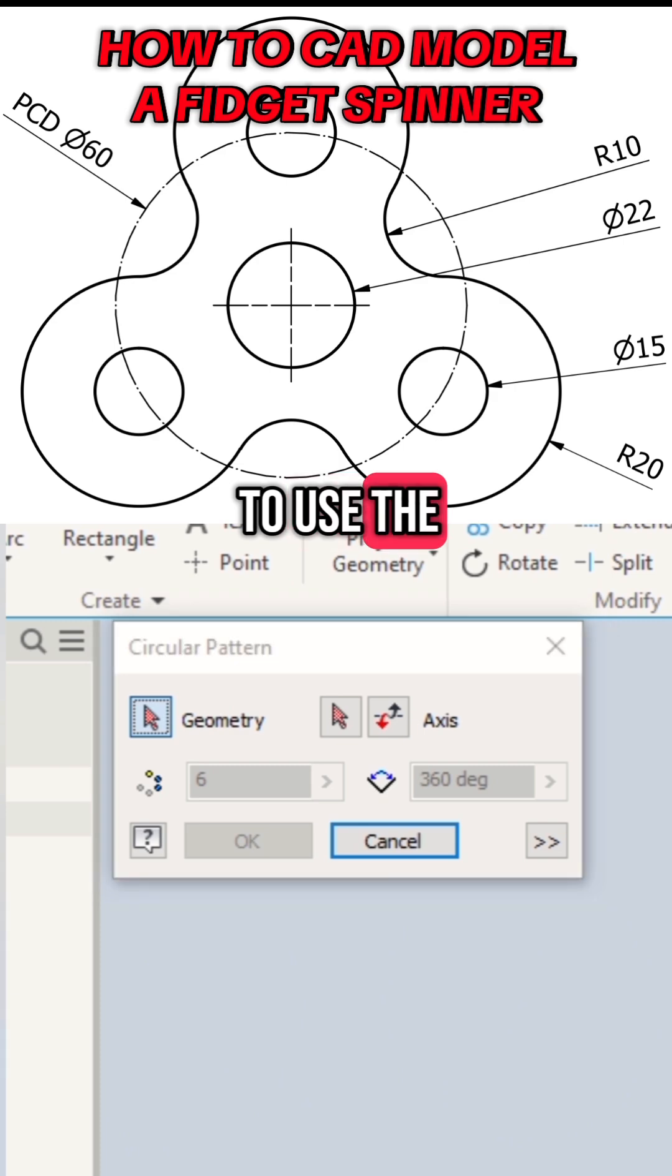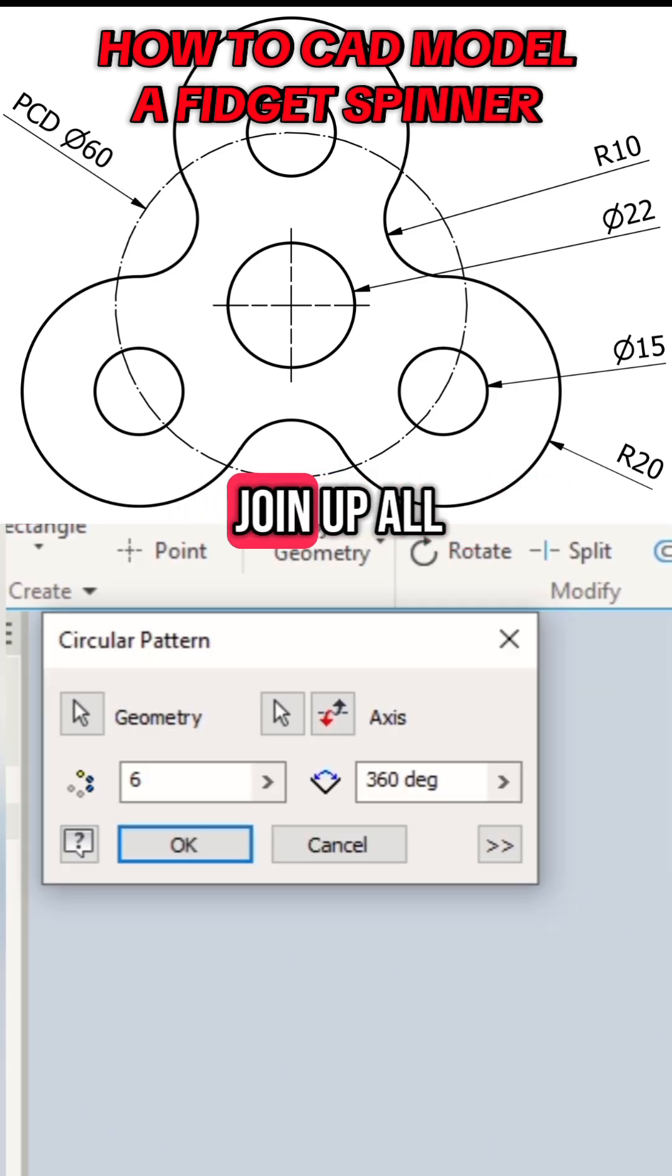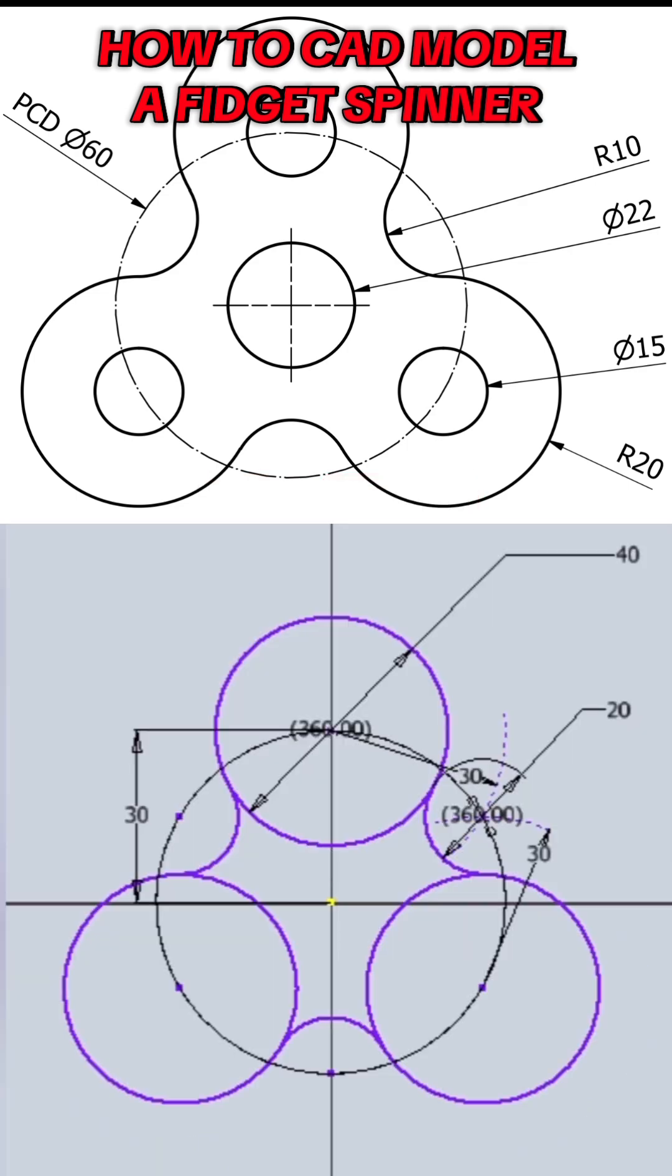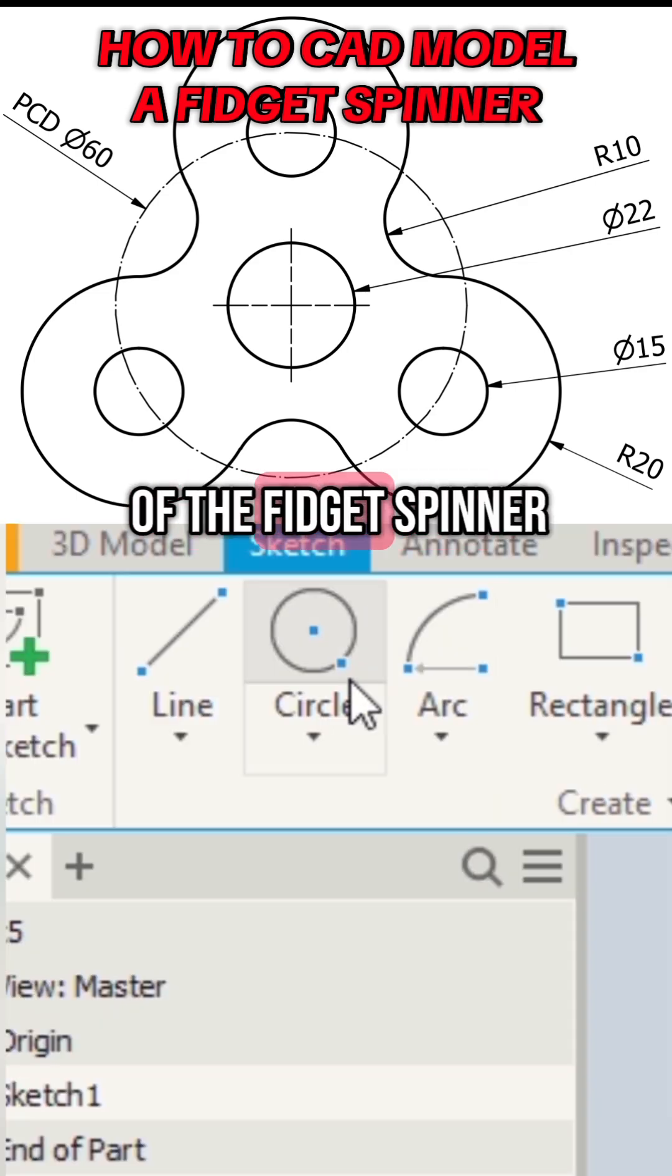Then we're going to use the circular pattern tool to repeat that arc three times like before to join up all three circles. This gives us the basic shape of the fidget spinner.